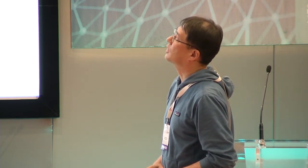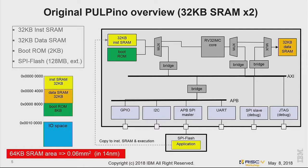Briefly, the original Pulpino uses 2×32 kilobytes of SRAM for instruction and data sides, totaling 64 kilobytes of SRAM. The size is 0.06 millimeter square in 14 nanometer technology. This is too large, so we wanted to reduce the memory size.